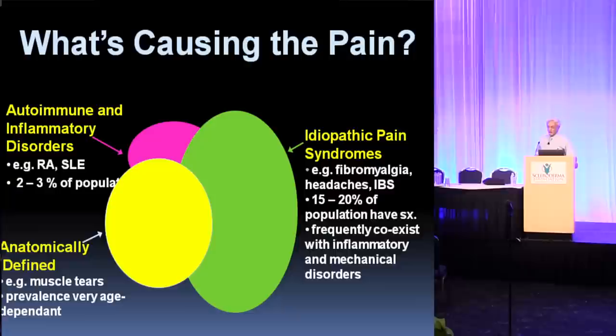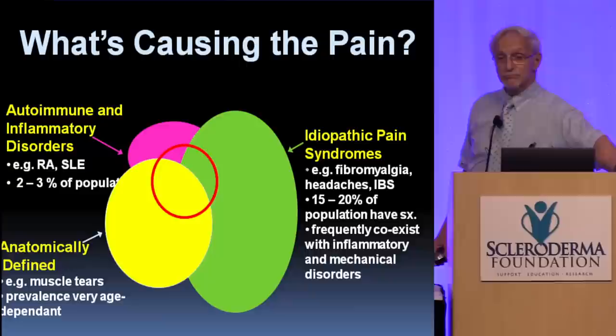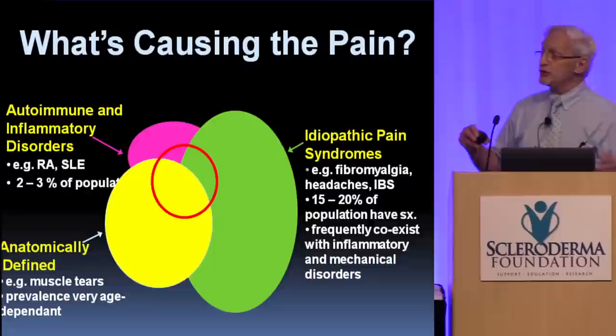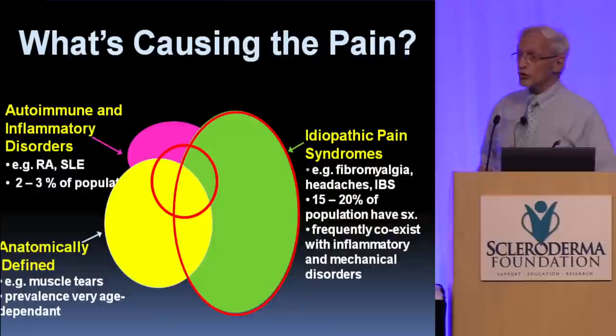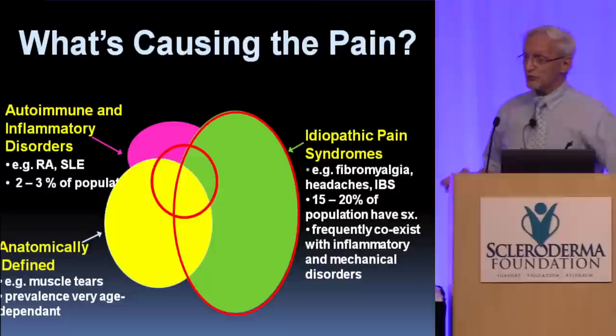I am going to talk about what's causing the pain. On this figure there are three areas: the anatomically defined pain, the pain associated with inflammation and auto-inflammatory diseases, and idiopathic pain. Notice how much overlap there is — in any one case it's going to overlap with all the others, so it's usually a combination of pains. And very importantly, look at the idiopathic pain syndromes — it's the largest part of this. So it's very important to be aware of that.